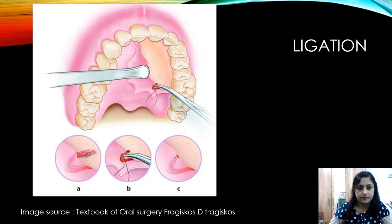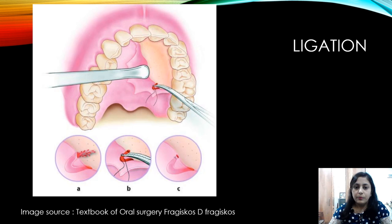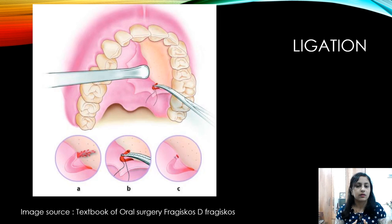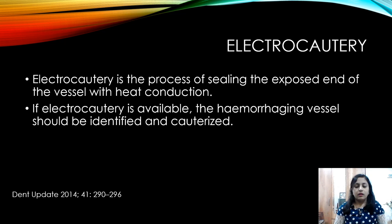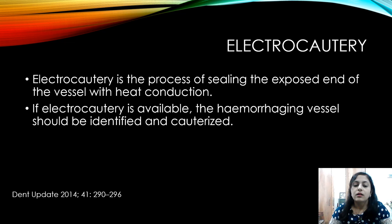If the bleeding is from a large laceration of a large artery, you need to ligate it: first visualize where the bleeding is coming from, clamp the artery with a hemostat, and then suture it. If the vessel is very small, use a narrow hemostat for clamping. If you have electrocautery in your clinic, it is very effective for control of bleeding — electrocautery is a process where we seal the exposed end of the vessel with heat conduction.